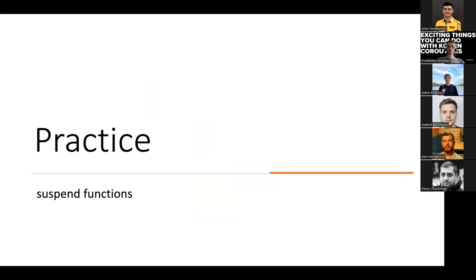That was a brief theory part. Now get ready to jump into the practice part. I decided to pick some non-trivial examples because I bet everyone here is already familiar with querying a Room database or a Retrofit API using Kotlin coroutines. So I picked some interesting examples where you can apply coroutines in unusual ways.